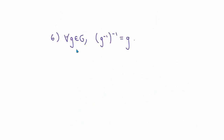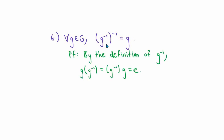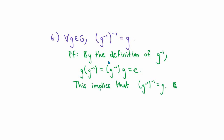The next property says that for any group element g, the inverse of the inverse of g is just g itself. Please don't take this for granted — one of the difficult things about this subject is learning to think abstractly, so even though this should hold for a non-zero real number, here I'm stating it for any abstract group. The proof is easy: by definition of g inverse, g inverse times g is the identity. By the property we just showed, this implies the inverse of g inverse is g, which is exactly what we wanted.